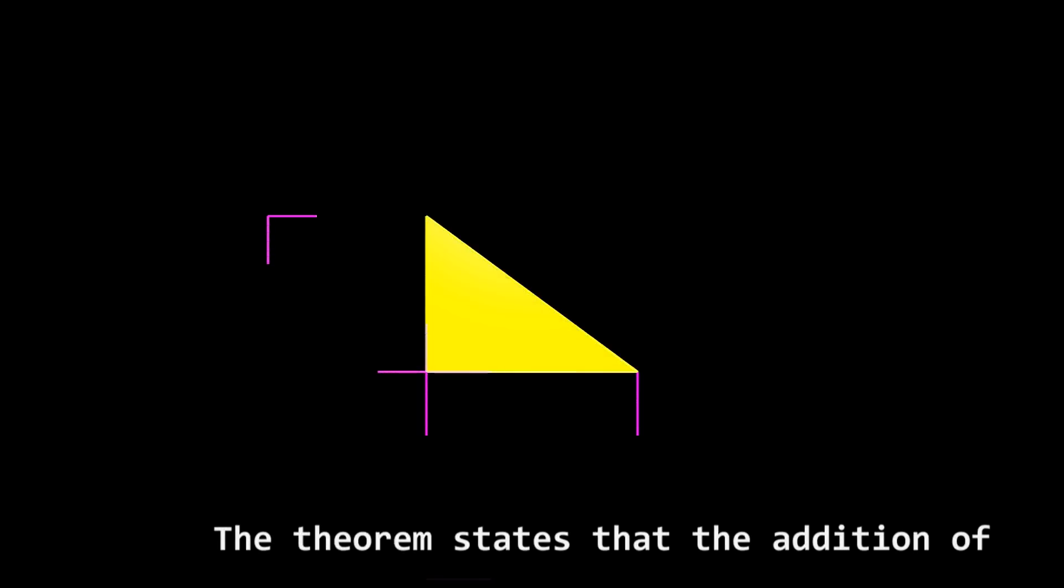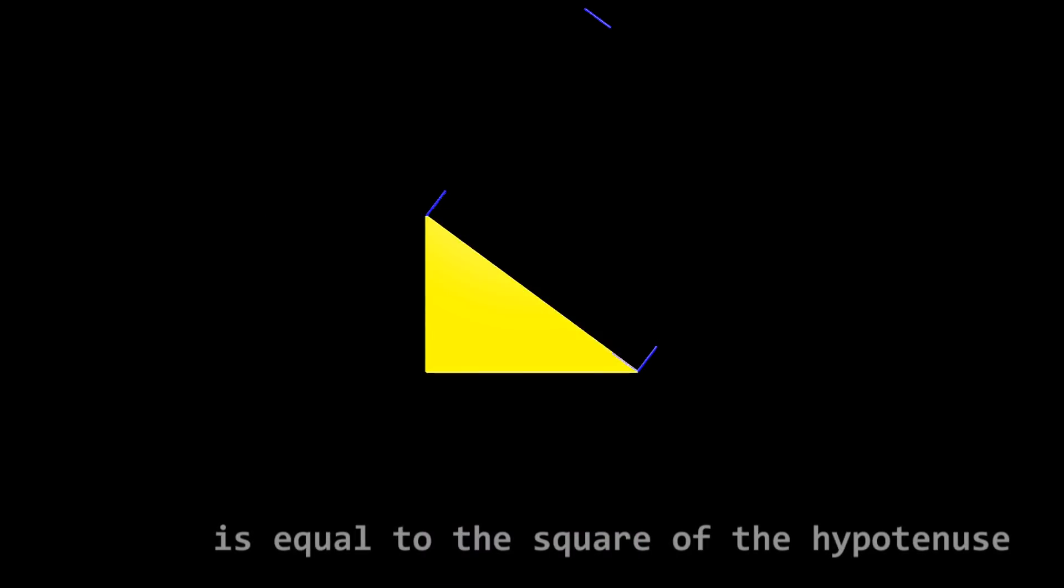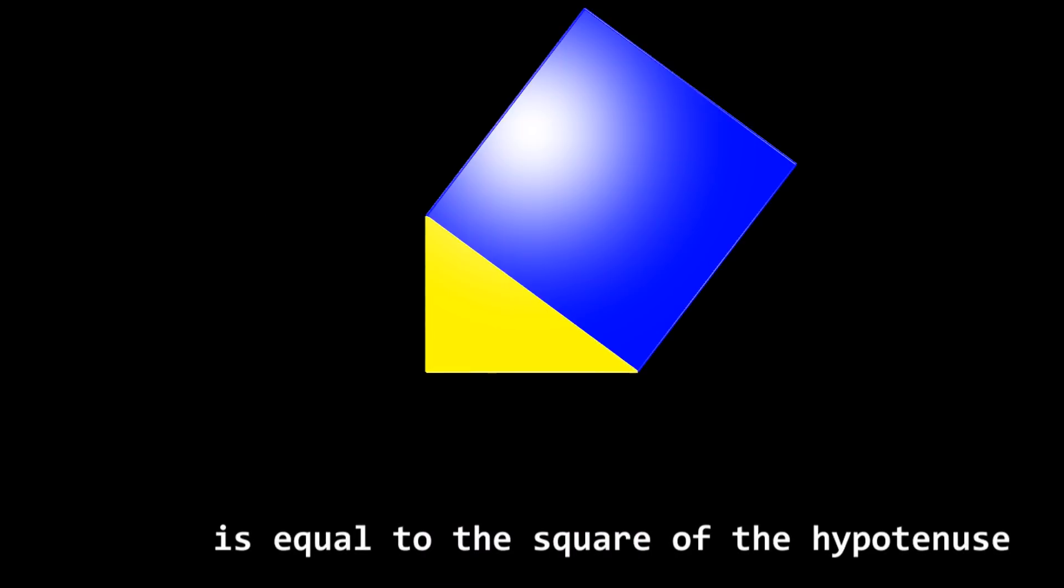The theorem states that the addition of the squares of both sides of a right triangle is equal to the square of the hypotenuse.